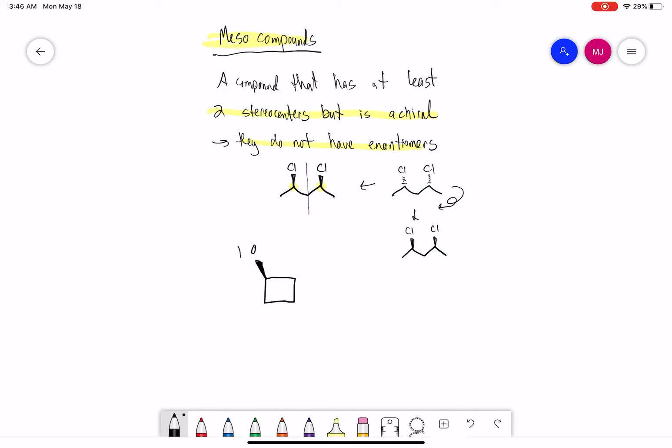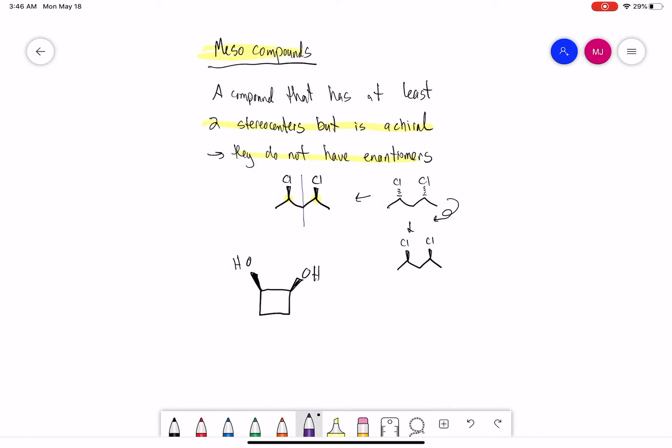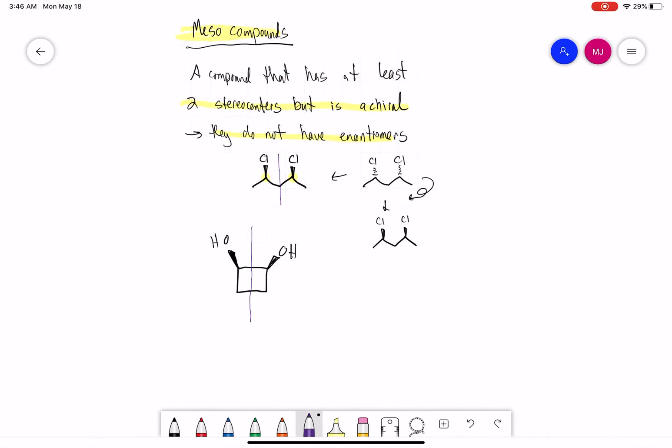This compound here—again we have two stereocenters, but there's an internal plane of symmetry, so this molecule is meso. Let's look at another example here.